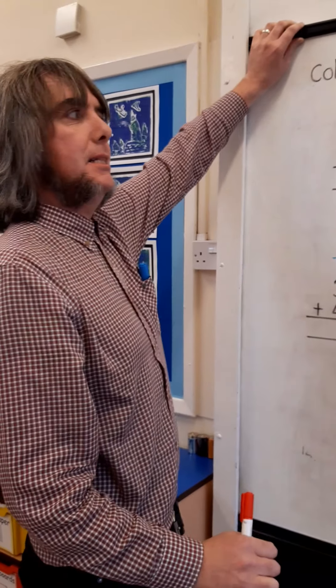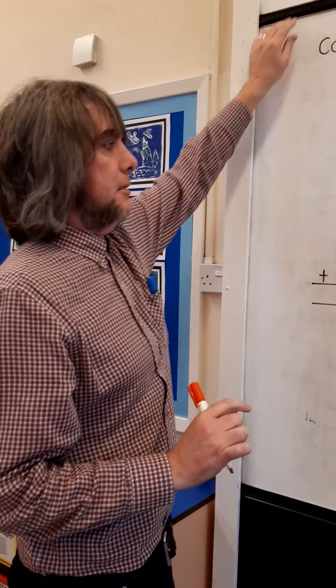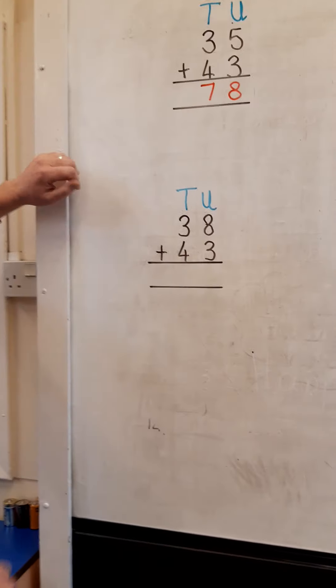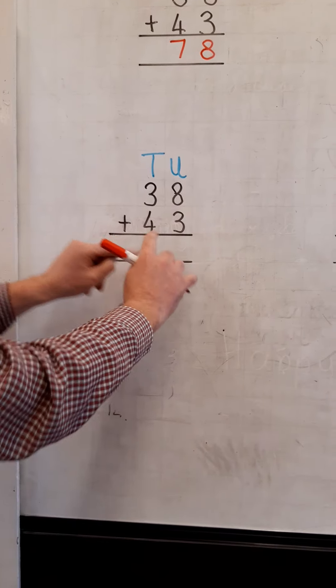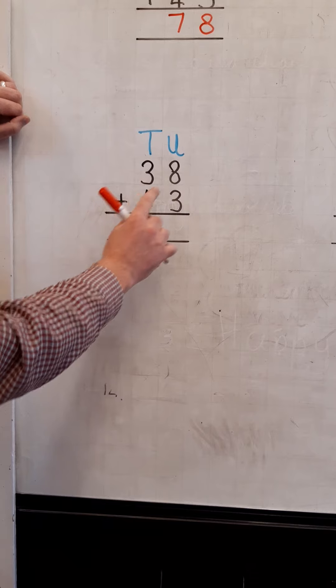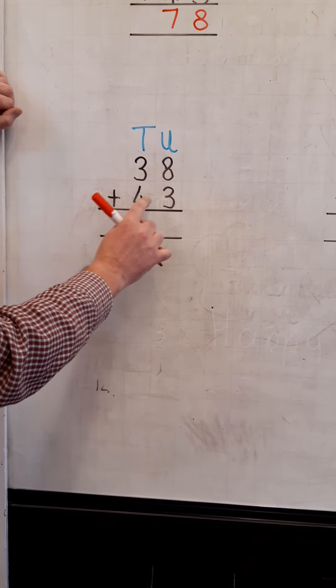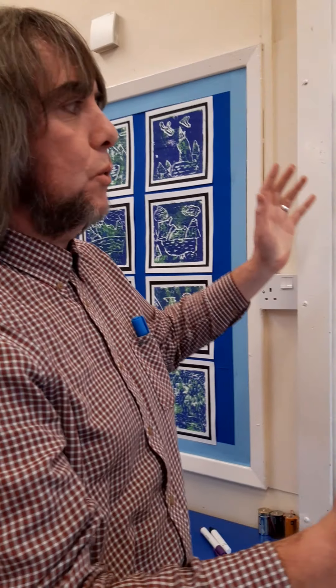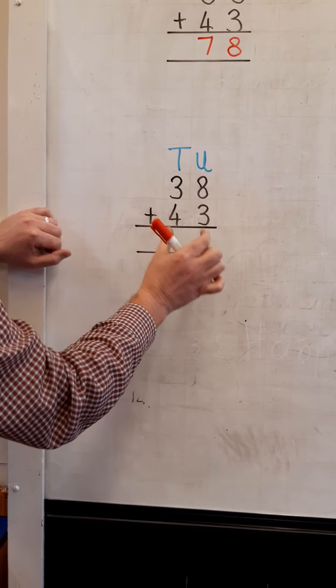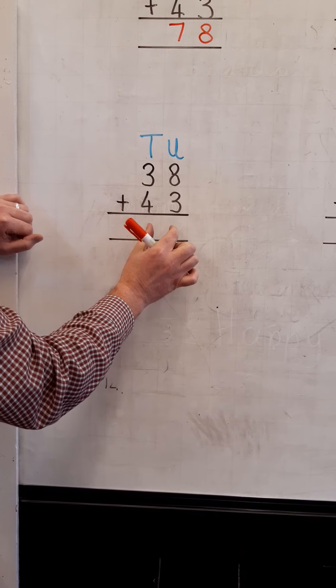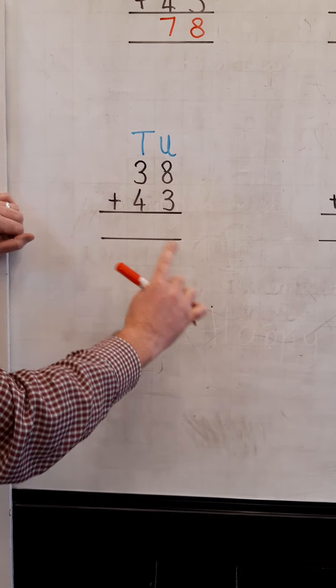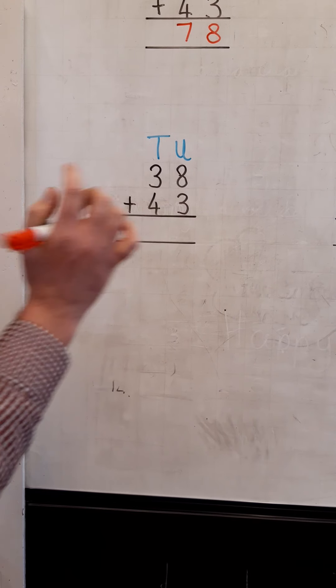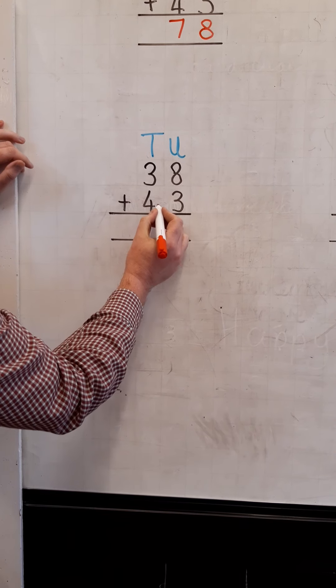However, it gets a little bit trickier when we come to this particular calculation. Yes, it's two digits add two digits, but now we have eight and three. Eight and three gives us a total of eleven. One ten. But we can't write eleven down just yet because eleven is made up of ten and units. So the eleven we write like this.